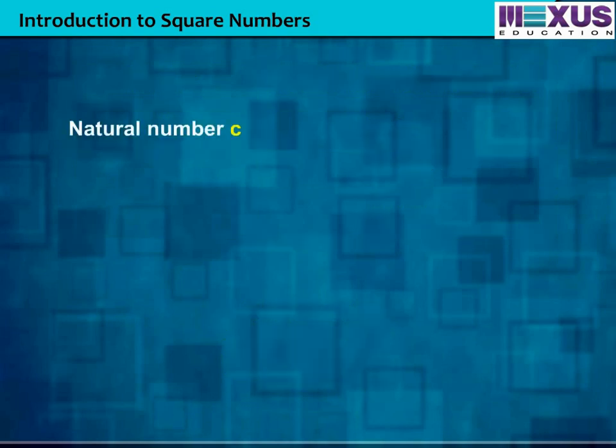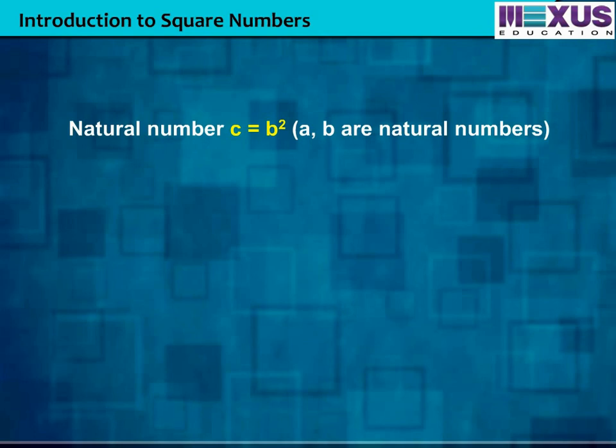Generally, we can say a natural number C, which can be expressed as B square, where B is also a natural number, then C is a square number.